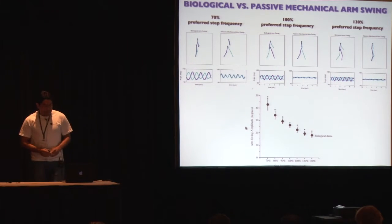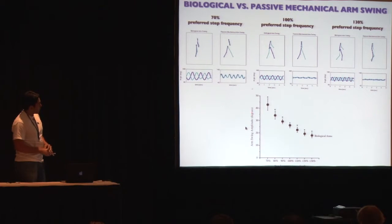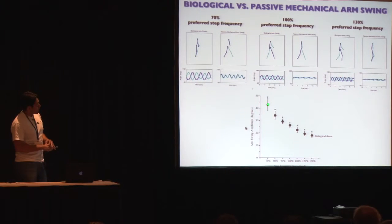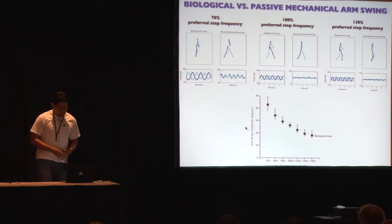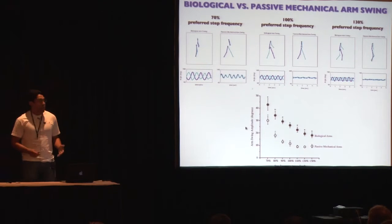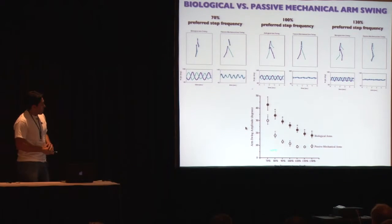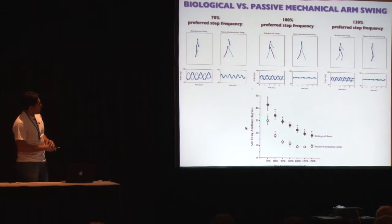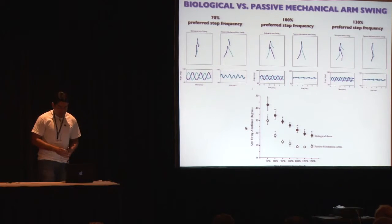Looking at average trends, the average amplitude of biological arms at the preferred step frequency is about 26 degrees. This decreases at faster step frequencies and increases dramatically at the slowest step frequencies. For passive mechanical arms, the amplitudes were generally less than biological arms at preferred step frequency — about 10 degrees — remaining relatively the same at faster step frequencies and then steadily increasing at the very slow step frequencies.